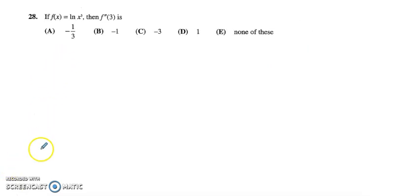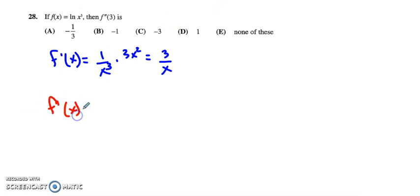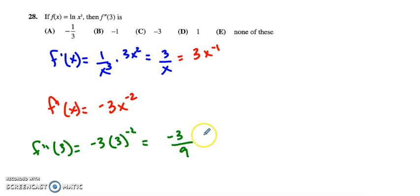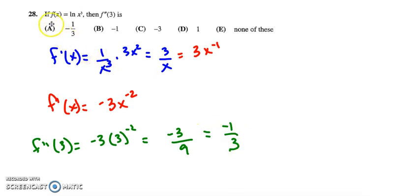Number 28, they also want the second derivative here. Don't forget the chain rule, because ln goes to 1 over the inside function x cubed times the derivative of x cubed, which is 3x squared. When I simplify, I end up with 3 over x. To get my second derivative, I'll rewrite this as 3x to the negative 1 to make life easier when I differentiate with the power rule. So 3x to the negative 1 becomes negative 3x to the negative 2. Evaluating at 3, I get negative 3 times 3 to the negative 2, which is negative 3 over 9 or negative 1/3, and my answer is A.